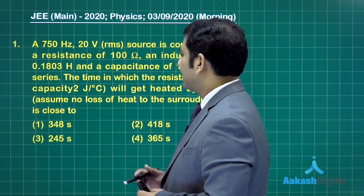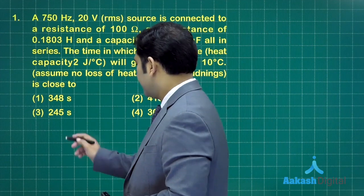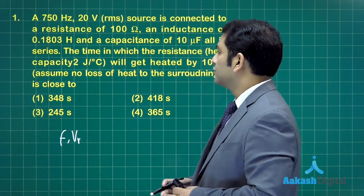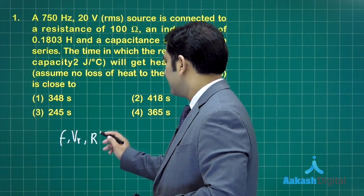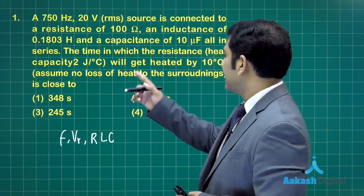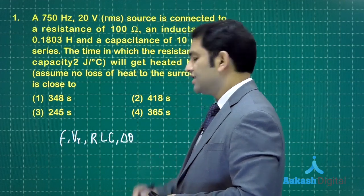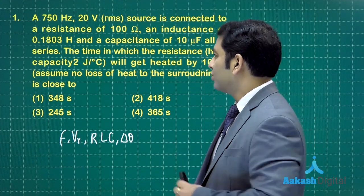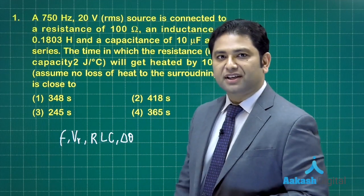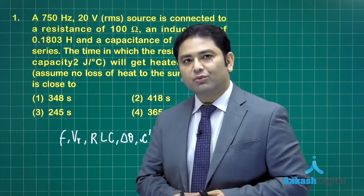What does the question say? I will just sort out the variables that have been given. First of all, there is a frequency F and that is 750 Hz. So let me sort out the variables: F is the frequency, V_RMS has been given, and that is connected to a resistance, inductance, and capacitance. That means there is RLC series. All the values have been given. Now the question says the time in which the resistance will get heated by 10 degree centigrade. So if I represent that by delta theta, the change in temperature, we need to calculate the time required for that. And here the heat capacity has been given. Remember, it is not the specific heat capacity. The heat capacity has been given, so let me represent the heat capacity by C dash.